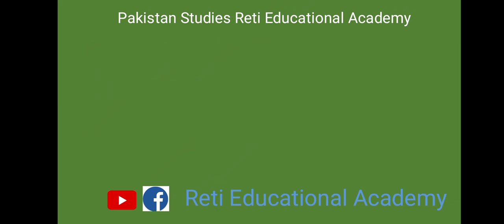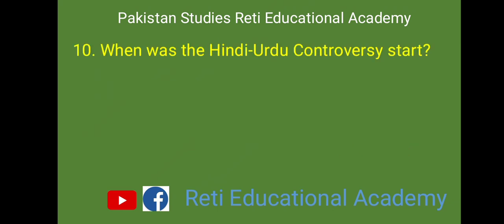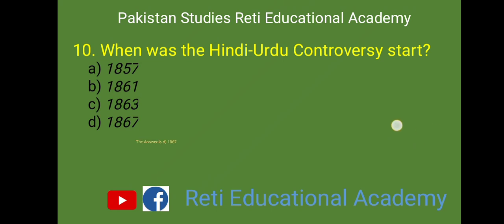MCQ number 10: When was the Hindi-Urdu controversy started? A. 1857, B. 1861, C. 1863, D. 1867. And the right answer is D. 1867.